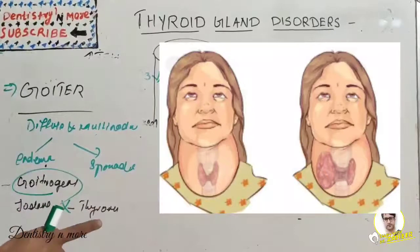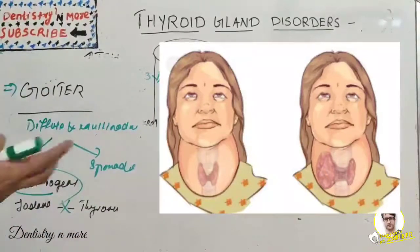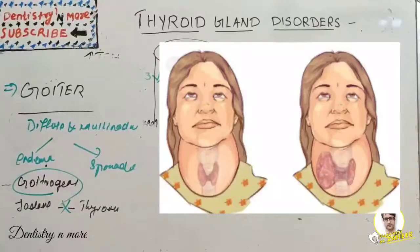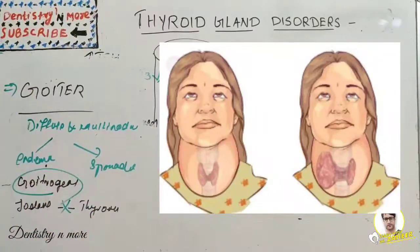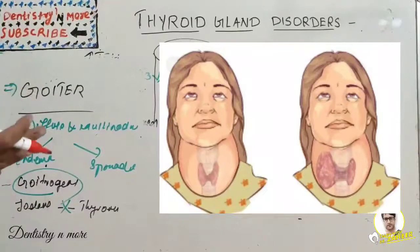Sporadic goiter is less frequent than endemic goiter, with female predilection. Multinodular goiter results from recurrent hyperplasia or hypertrophy — all simple non-toxic goiters can evolve into a multinodular one, and the thyroid gland will be asymmetrically enlarged.